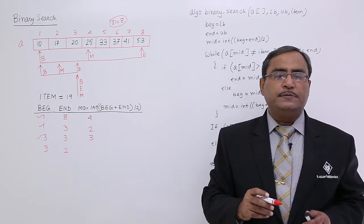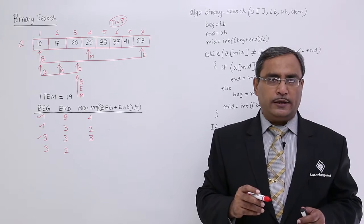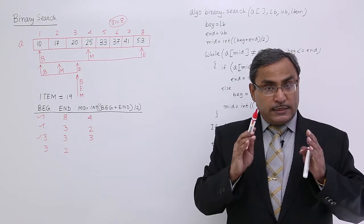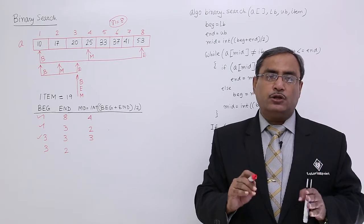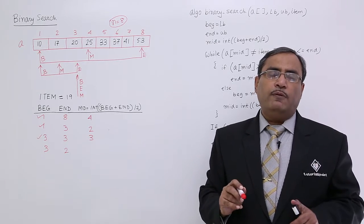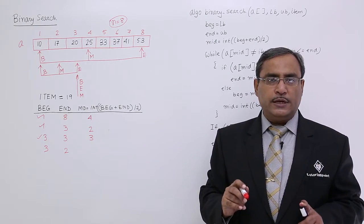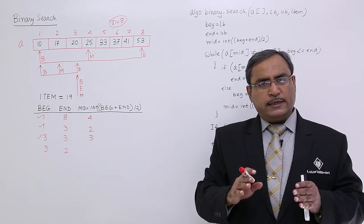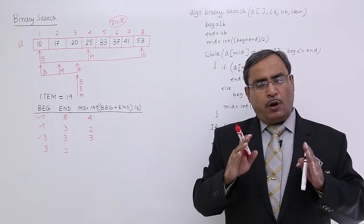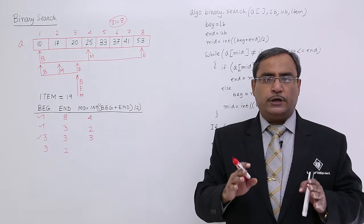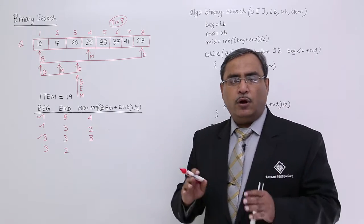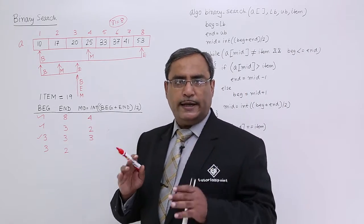Since the limits have crossed, that means unsuccessful searching — I cannot find this item in this particular set of data. Unsuccessful searching will be declared. This is the basic logic of binary search, which is applicable only on pre-sorted arrays or pre-sorted data.